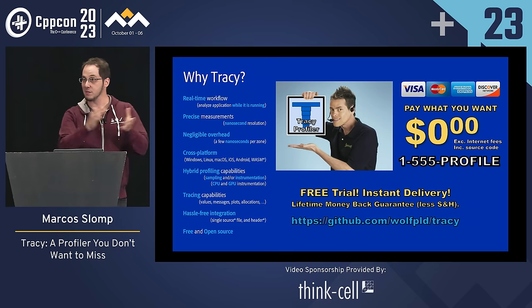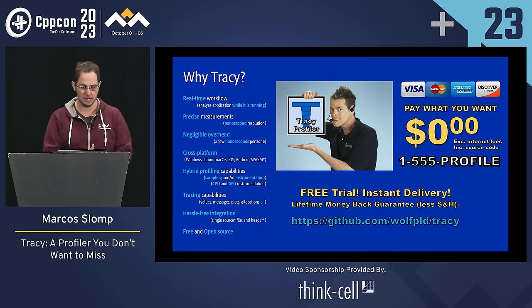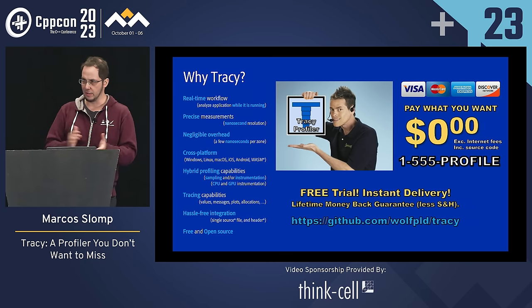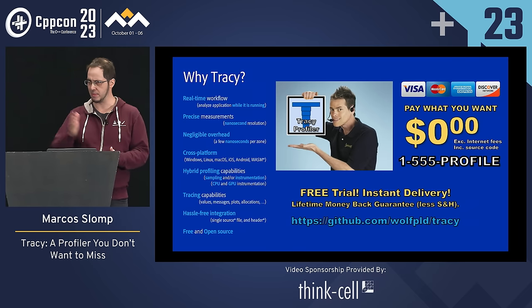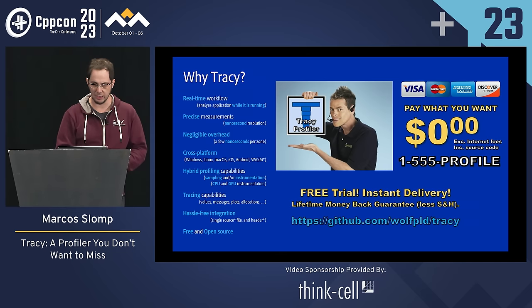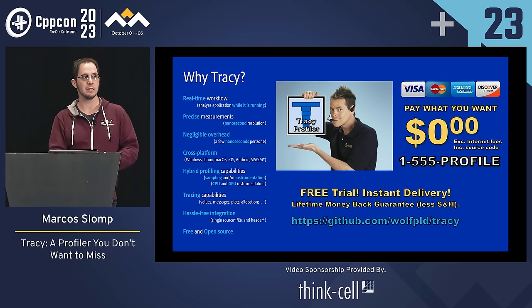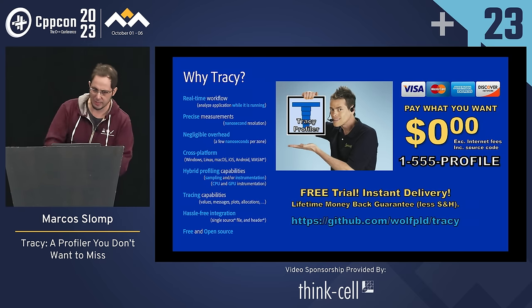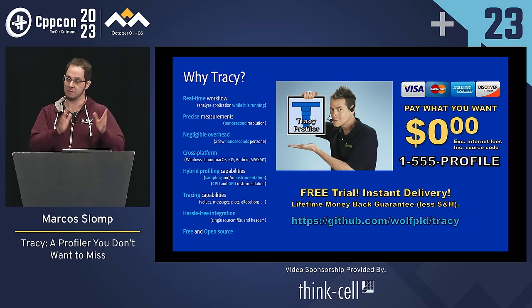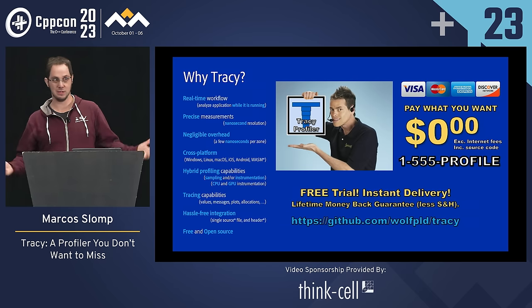Tracy allows a real-time workflow — as your program is running, you can interact with the profiler. It's capable of pushing millions of events per second, with very precise measurements down to nanosecond levels, and very little overhead. It's cross-platform, even WebAssembly is in the pipeline. It has hybrid profiling capabilities — mixing sampling and instrumentation — GPU profiling alongside CPU, which is a killer feature. It's very hassle-free to integrate, and it's free and open source.